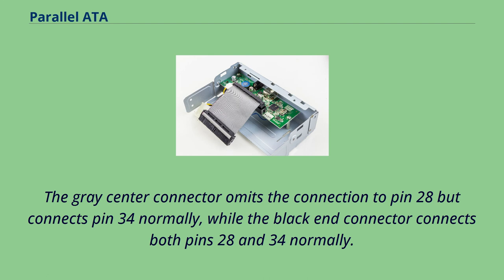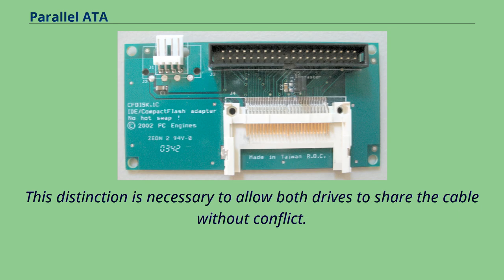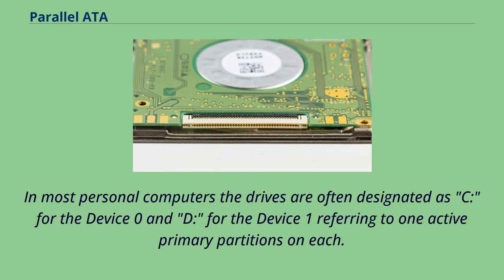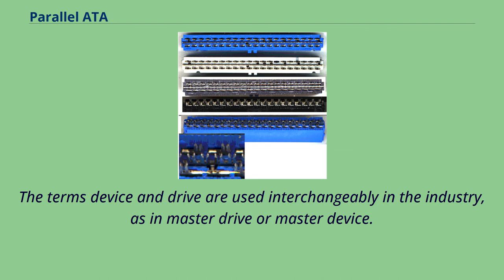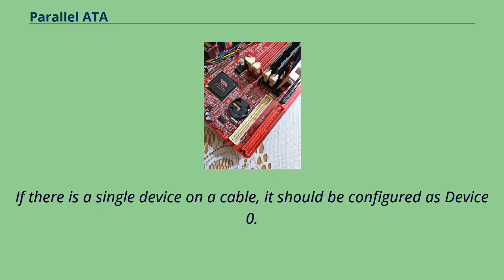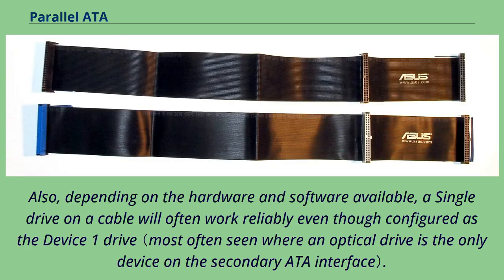If two devices are attached to a single cable, one must be designated as device 0 and the other as device 1. This distinction is necessary to allow both drives to share the cable without conflict. The device 0 drive is the drive that usually appears first to the computer's BIOS and/or operating system. In most personal computers the drives are often designated as C for device 0 and D for device 1, referring to one active primary partition on each. The mode that a device must use is often set by a jumper setting on the device itself, which must be manually set to device 0 or device 1. If there is a single device on a cable, it should be configured as device 0. However, some drives have a special setting called 'single' for this configuration. Also, depending on the hardware and software available, a single drive on a cable will often work reliably even though configured as the device 1 drive.